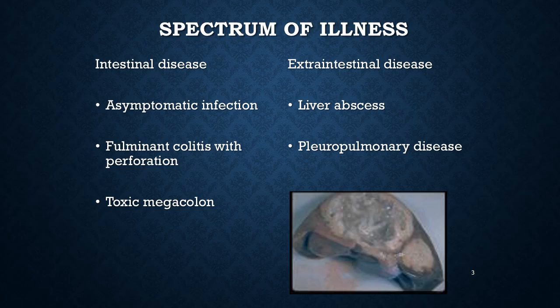Amoebic liver abscess: the male-to-female ratio of this disease is around 10:1. There is abrupt onset of high fever, with dull, aching, constant abdominal pain in the right upper quadrant or the epigastrium, usually lasting fewer than 10 days. The pain is constant and may radiate to the right scapula and shoulder.